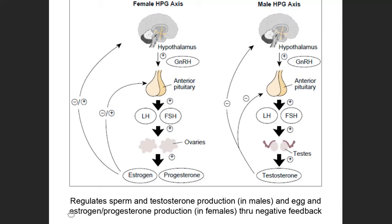In this video we're going to get into the reproductive system, specifically focusing on an aspect seen in both males and females known as the HPGA, sometimes called the HPG axis. HPG stands for hypothalamus pituitary gonadal axis. The hypothalamus and pituitary are endocrine structures within the brain, while the gonads are the testes in males and the ovaries in females.